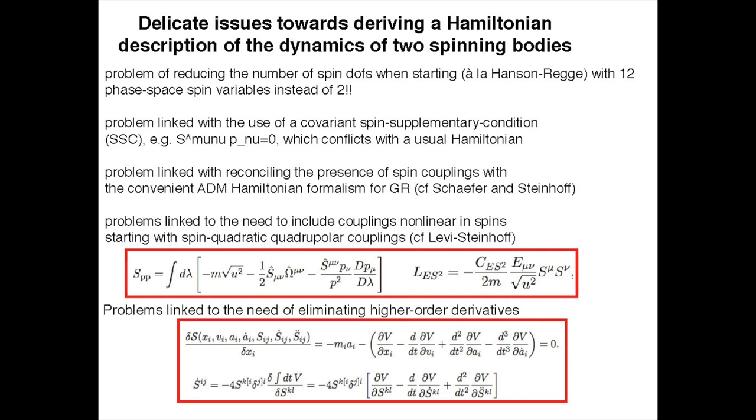A very convenient formalism where many calculations of the interaction of two black holes have been done is the Arnowitt-Deser-Misner, or ADM, Hamiltonian formalism. This is a canonical Hamiltonian formalism for Einstein's field equation where instead of second-order evolution for the metric, you have the metric and its conjugate momentum in space — g_{ij} and pi^{ij} — and first-order evolution equations. There is a problem when you couple this to a spinning particle: it introduces complications and derivative interactions.